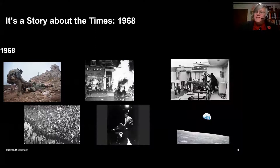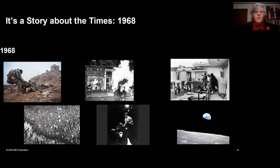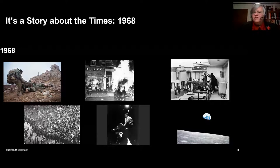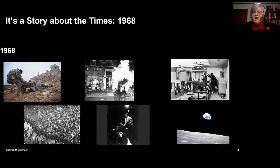It's also a story about the times. 1968 was a particularly stressful time in the world — we were in the midst of the Vietnam War, there were riots and protests in the streets. We had the assassinations of Martin Luther King and Robert F. Kennedy. Really an awful year. But it ends in the most positive, most optimistic of ways. That photo now called Earthrise was taken by Apollo 8 as it circled the moon, and some people believe it helped trigger the environmental movement that became significant in the early 70s.